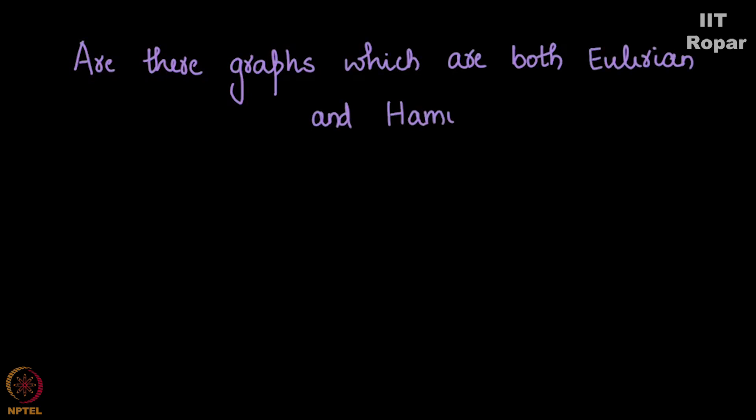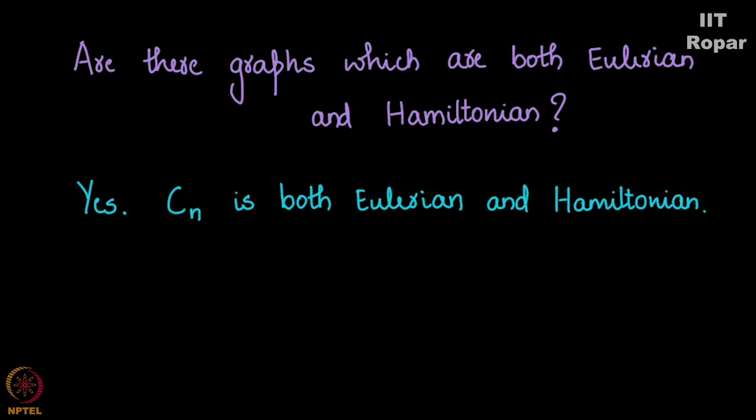Now are there graphs which are both Eulerian as well as Hamiltonian? Yes, definitely Cn. All Cn are Hamiltonian as well as Eulerian. We cannot state in general that graphs which are Hamiltonian are Eulerian or vice versa. It always depends on the graph.